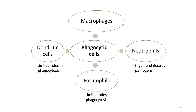There are four types of phagocytic cells: macrophages, neutrophils, eosinophils, and dendritic cells. Both dendritic cells and eosinophils play limited roles in phagocytosis, while neutrophils are able to engulf and destroy pathogens.